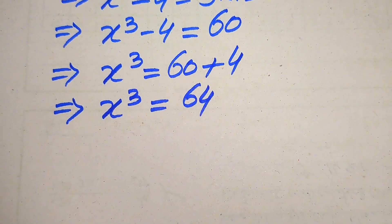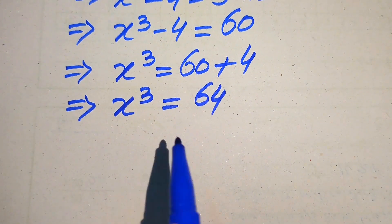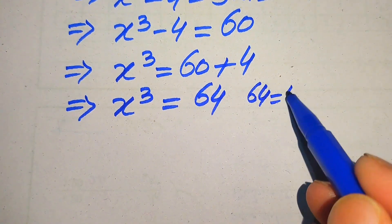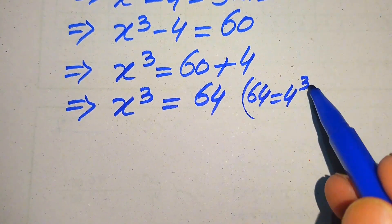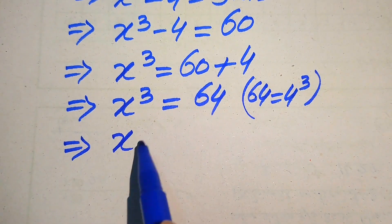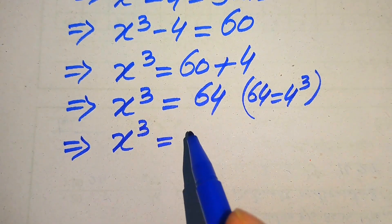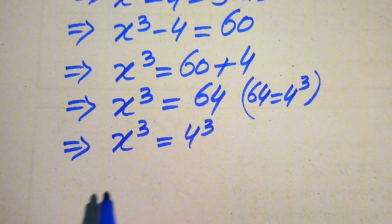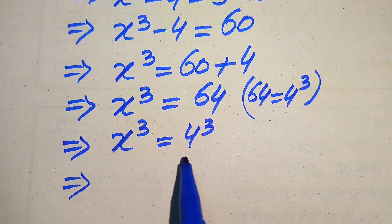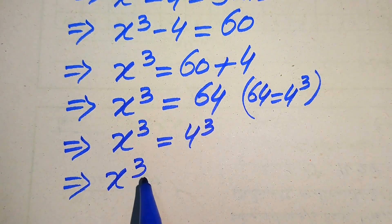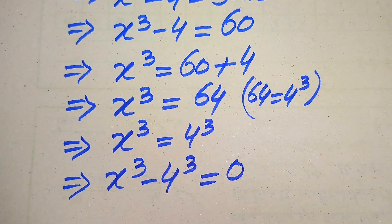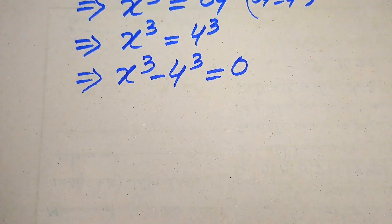Because we are solving for integer values of x, we write 64 as 4 cubed, and replace 64 with 4³. So it becomes x³ = 4³. Now we move 4³ to the left-hand side, giving x³ - 4³ = 0.